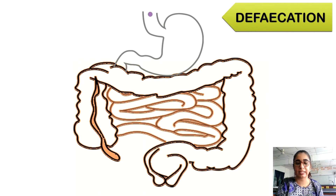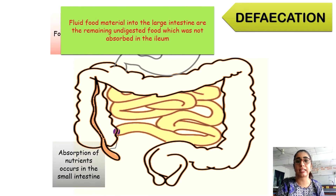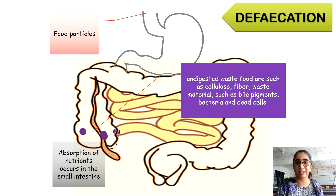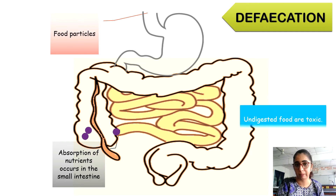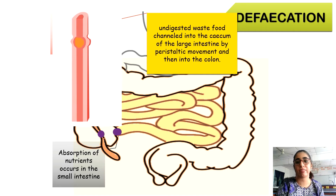From the previous lesson, you know that food can be digested and absorbed once it reaches the ileum. After that, the intestinal contents enter the large intestine. Absorption of water from the undigested food remains in the colon, resulting in the formation of feces. Feces also consists of dead cells shed from the intestinal lining, as well as bile pigment and toxic substances, which have to be eliminated from the body. The undigested waste food is channeled into the cecum of the large intestine by peristaltic movement, and then into the colon.